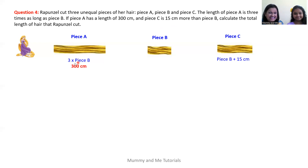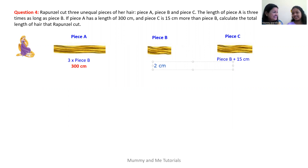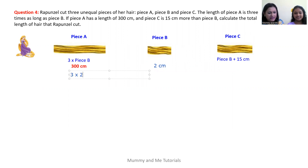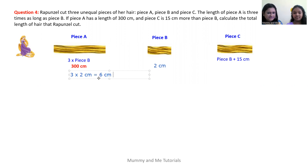Piece A is three times the length of piece B. For example, suppose piece B is two centimeters in length and piece A is three times the length of piece B — then piece A would be three multiplied by two centimeters, which equals six centimeters. Please notice that to calculate the length of piece A in this case, we use the rule of multiplication.